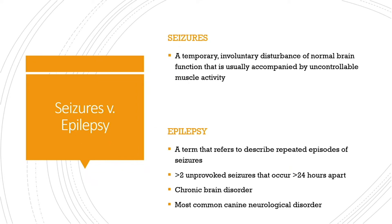First I want to go over the differences in terms between seizure versus epilepsy. A seizure is any kind of involuntary temporary disturbance in the brain, normally followed by some kind of uncontrollable muscle spasm — an abnormal surge of activity in the brain. Epilepsy is when a dog has multiple seizures that reoccur, with the guideline being more than two seizures greater than 24 hours apart. It's a chronic lifelong brain disorder and the most common neurological disorder in dogs.